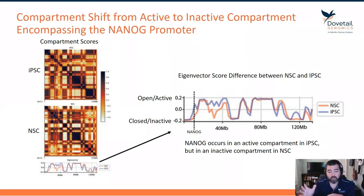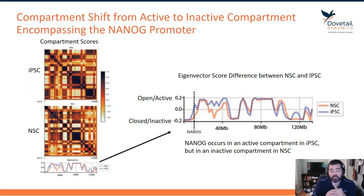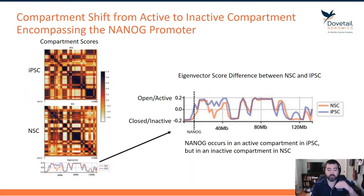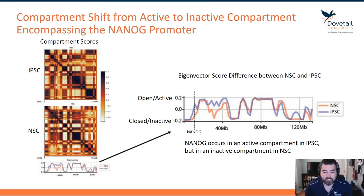I've blown up the eigenvector plot at the bottom and annotated the y-axis: if it's above zero, it's an open or active chromatin score; if it's below zero, it's a closed or inactive score — so those regions will be less transcriptionally active.